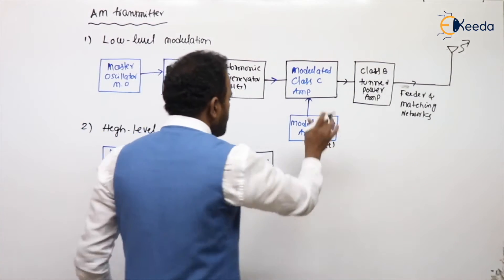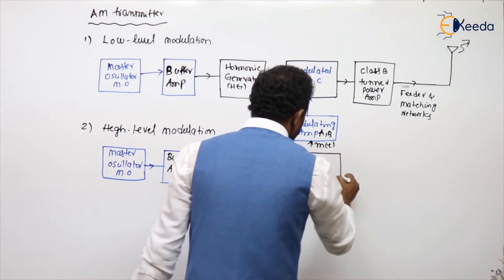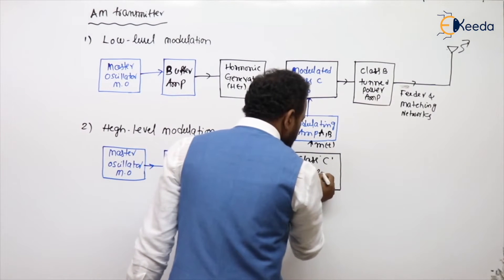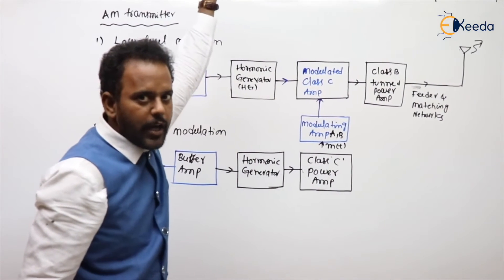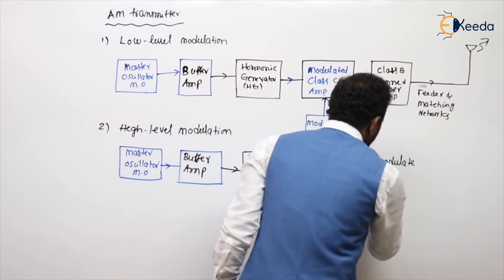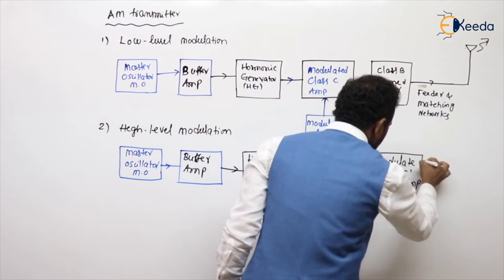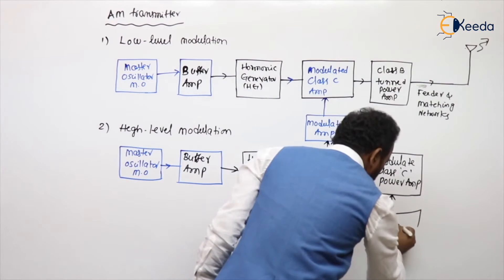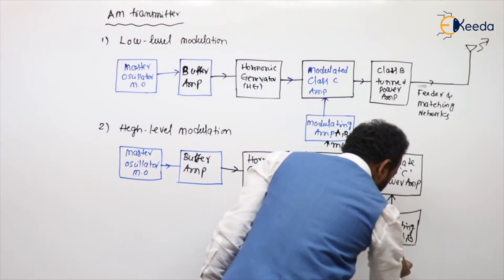Coming to high level modulation — see the difference. Before going for modulation, the carrier is given to one or more stages of class C power amplifiers, possibly multi-stage, to increase the carrier to a desired high power level. Then modulation is performed using a modulated class C power amplifier with collector modulation. The message signal is supplied through a modulating amplifier using class A or B.